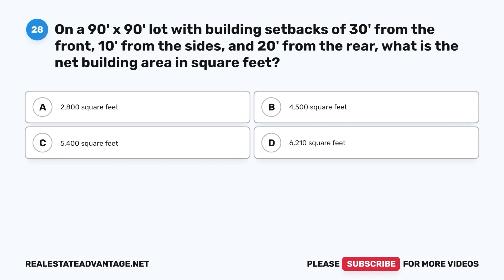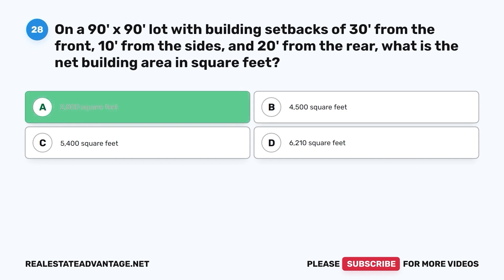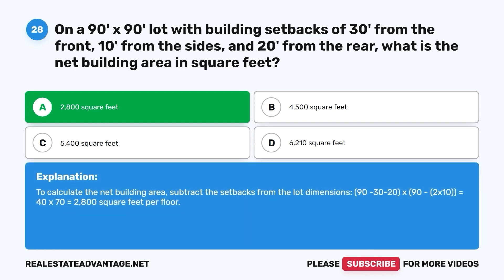Question 28. On a 90-feet-by-90-feet lot, with building setbacks of 30 feet from the front, 10 feet from the sides, and 20 feet from the rear, what is the net building area in square feet? A. 2,800 square feet. B. 4,500 square feet. C. 5,400 square feet. D. 6,210 square feet. The correct answer is A. To calculate the net building area, subtract the setbacks from the lot dimensions: (90 − 30 − 20) × (90 − 2 × 10) = 40 × 70 = 2,800 square feet.